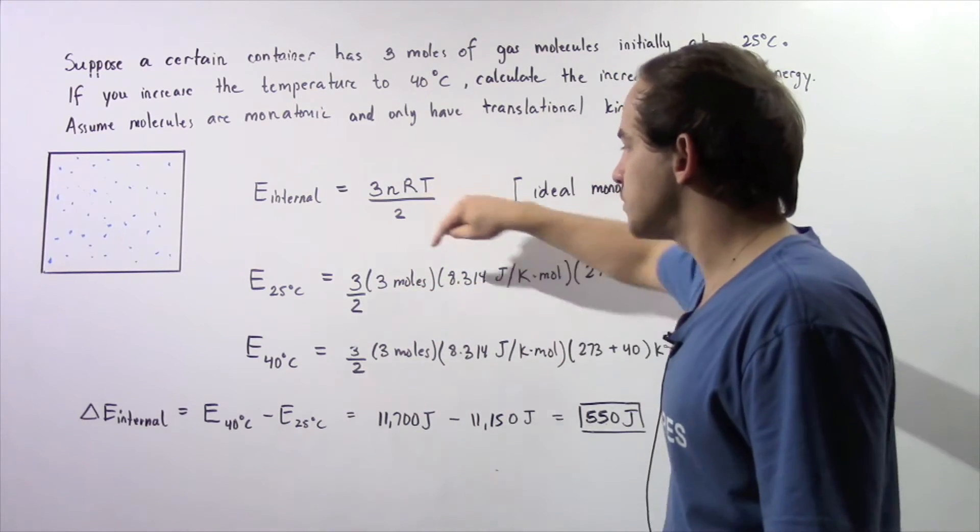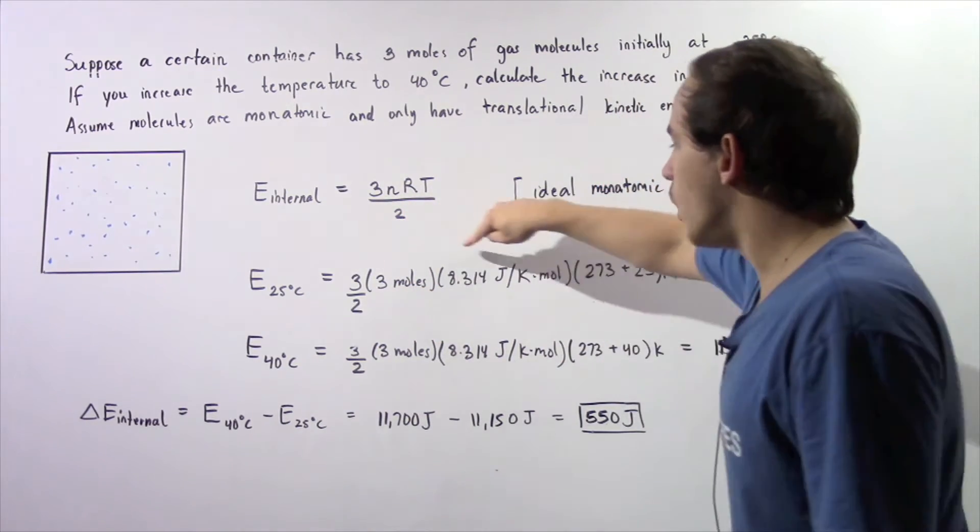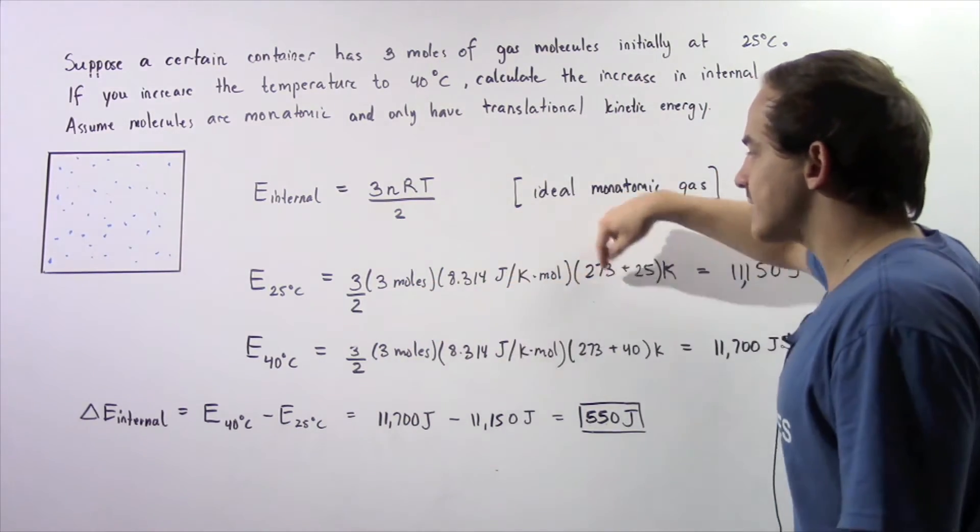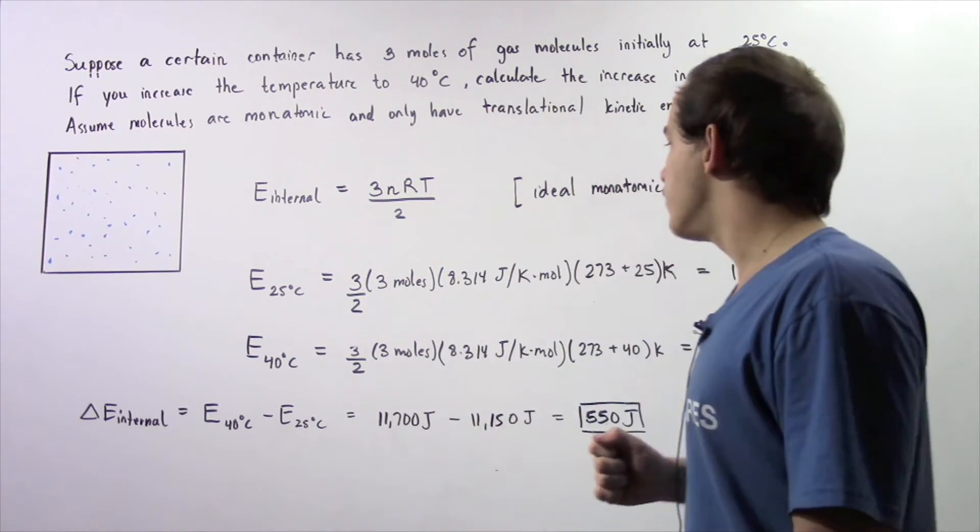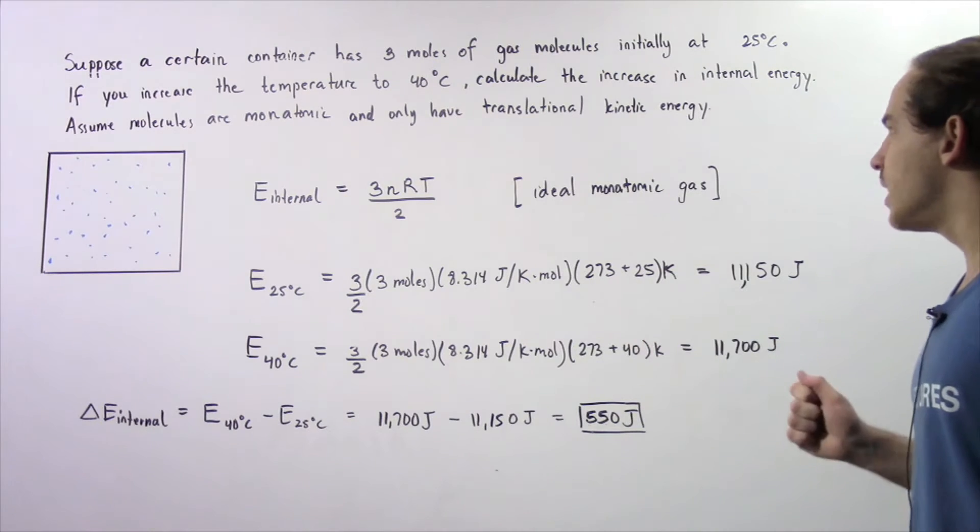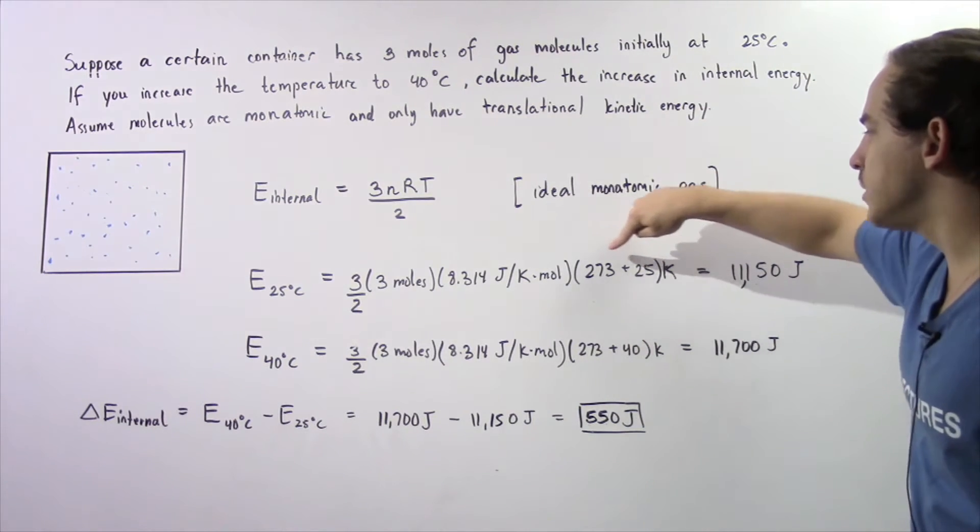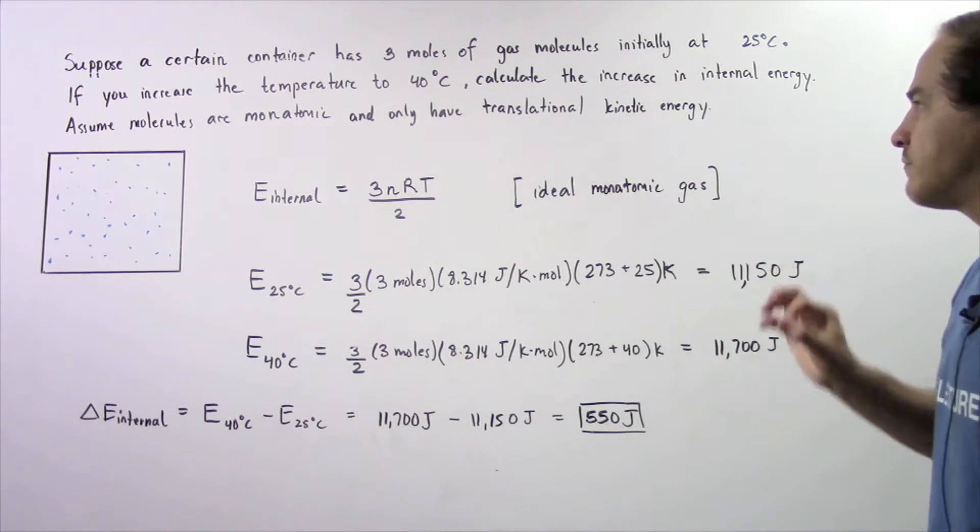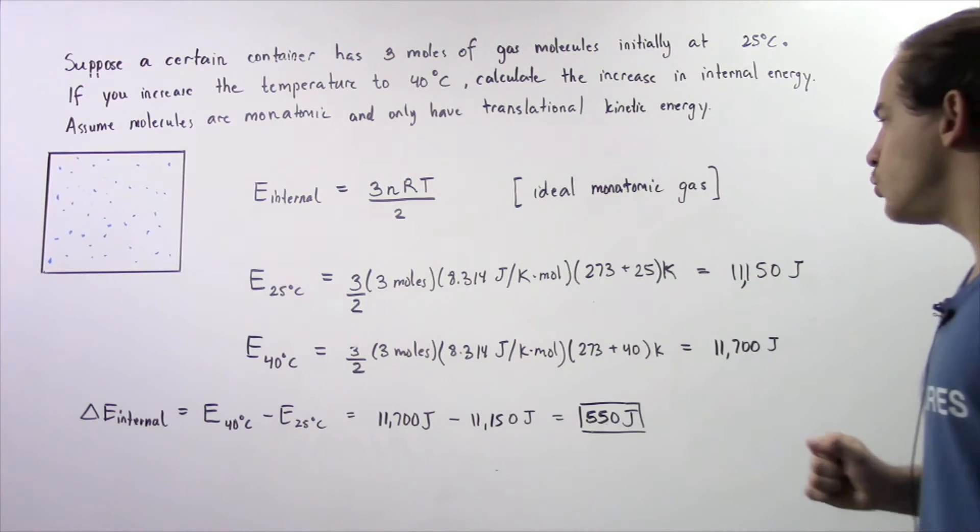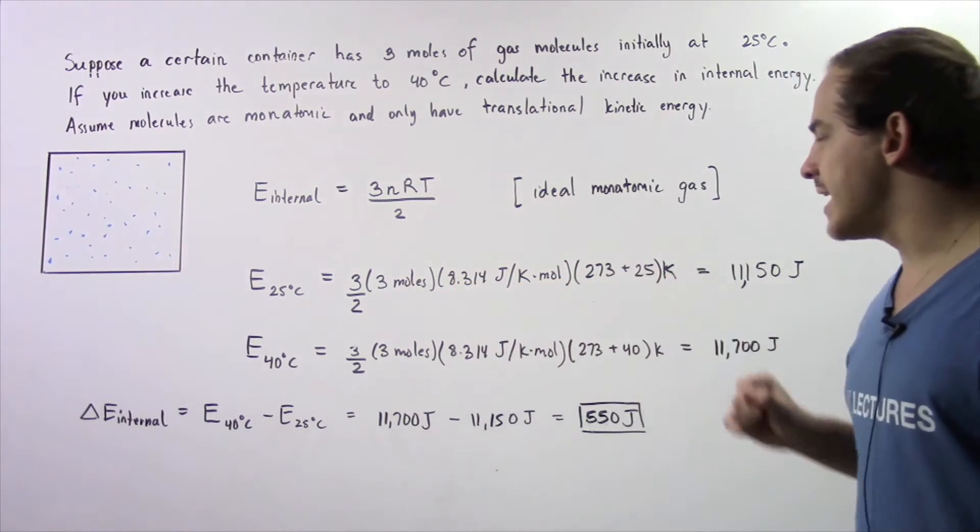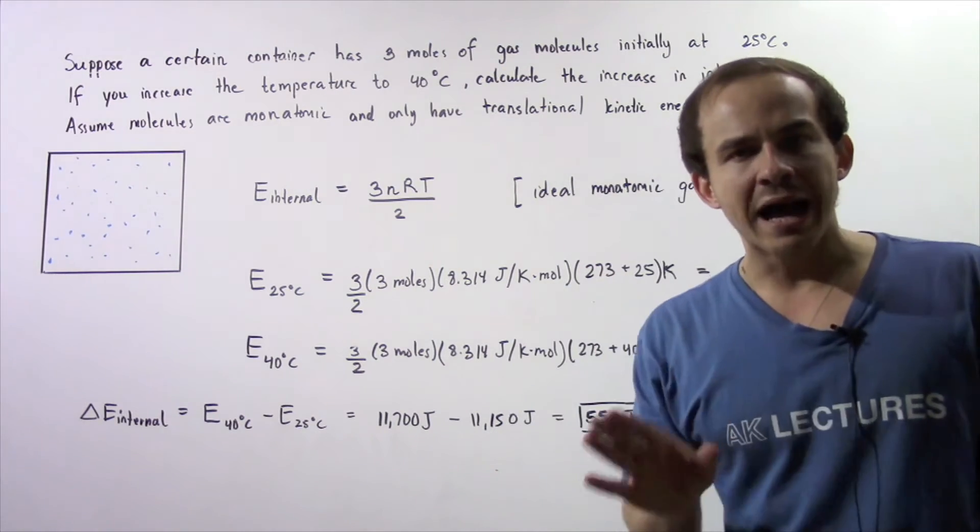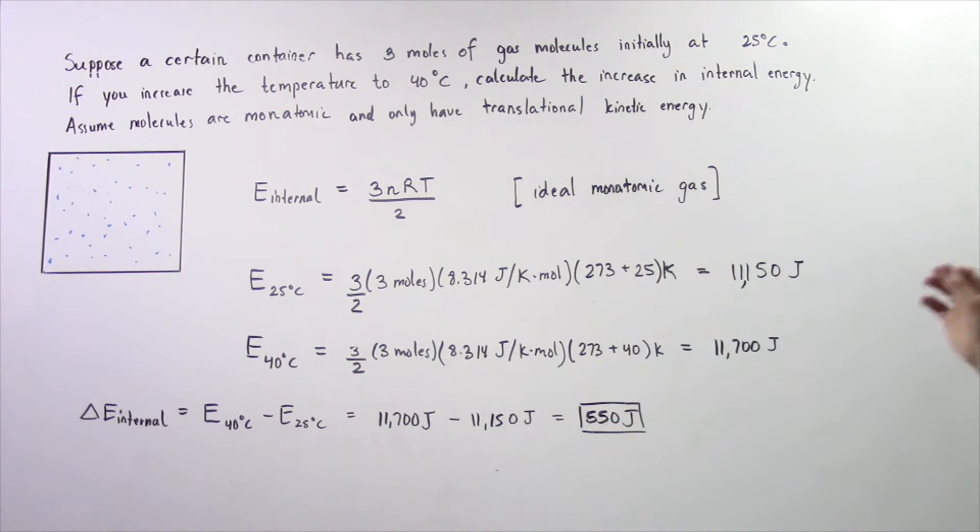So 3/2 multiplied by 3 moles multiplied by the universal gas constant 8.314 joules divided by moles times Kelvin, multiplied by 25 plus 273 because we have to convert from Celsius to Kelvin. Notice the Kelvins cancel, the moles will cancel, and we're left with about 11,150 joules of energy.